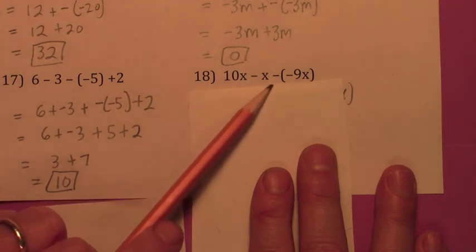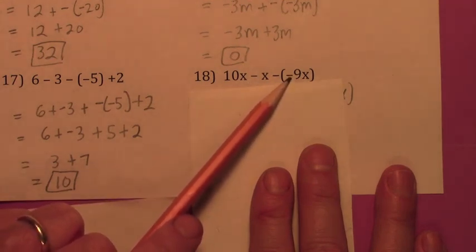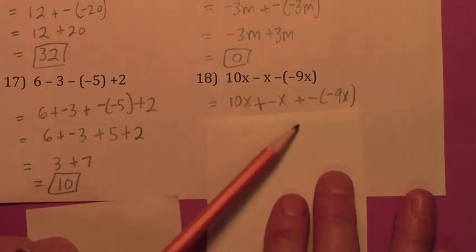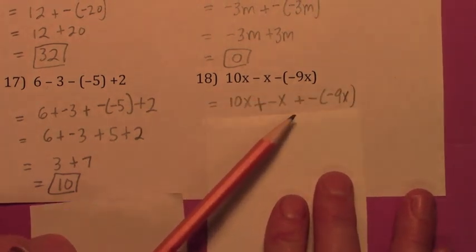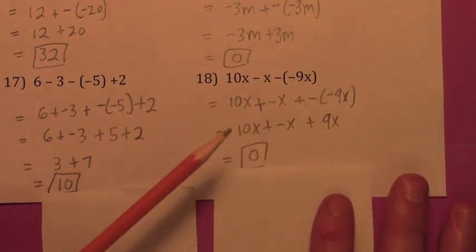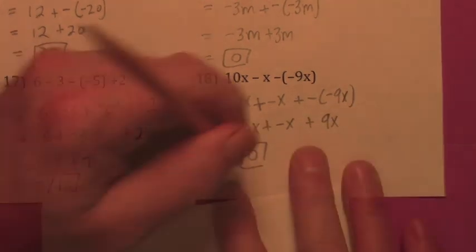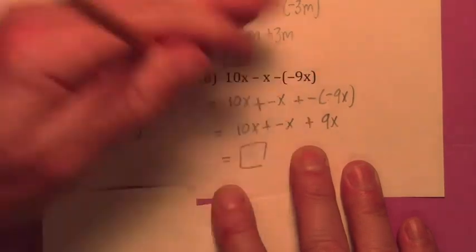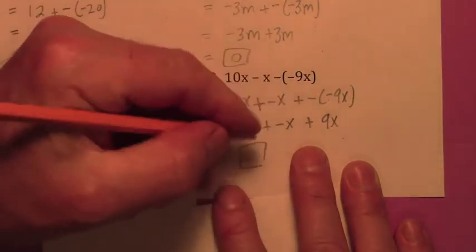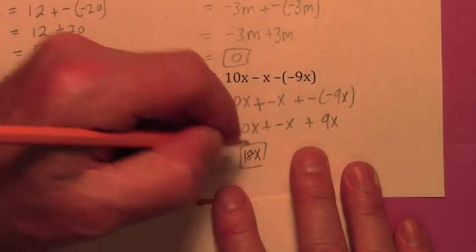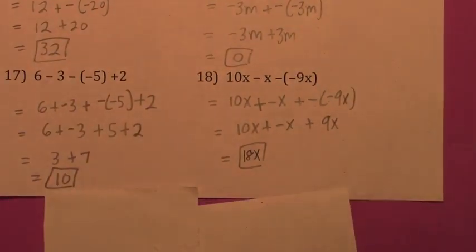This is a minus sign, that's a minus sign, and this is a negative sign — it stays negative 9x. The minus signs change to plus and negative. Get rid of the double negative on the 9x, and then when you combine everything — 9x plus 9x — your final answer is 18x.